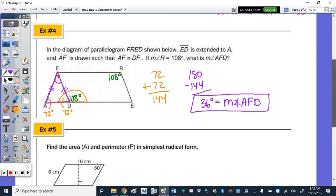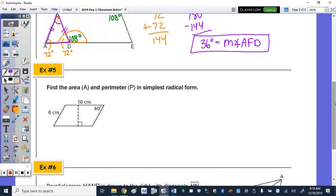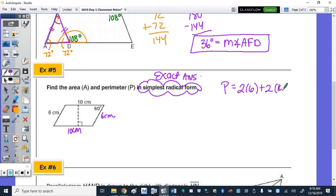Number 5. Find the area and perimeter of the parallelogram in simplest radical form. So simplest radical form, that means they want an exact answer. Okay? Well, right now I can find the perimeter, because opposite sides are congruent. So let's do that here. The perimeter would be 2 times 6 plus 2 times 10. So 20 plus 12 is 32 centimeters.